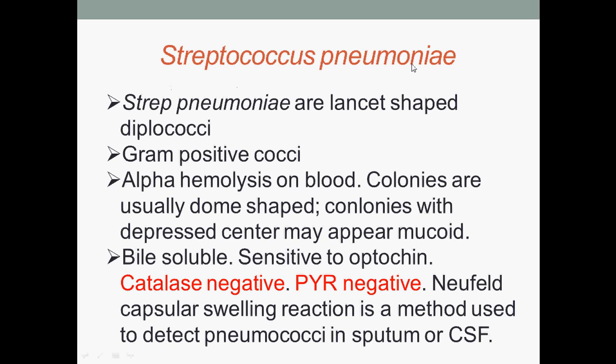The next bacterium is Streptococcus pneumoniae. They are lancet-shaped diplococci, gram-positive cocci, and exhibit alpha-hemolysis on blood agar. Colonies are usually dome-shaped with a depressed center that may appear mucoid — a mucoid colony shows viscous or sticky growth typical of an organism producing large quantities of a carbohydrate capsule. Streptococcus pneumoniae are bile-soluble, sensitive to optochin, catalase negative, and PYR negative. The quellung reaction is a method used to detect pneumococci in sputum or cerebrospinal fluid (CSF).